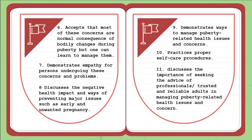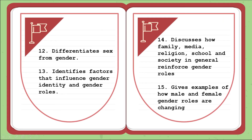Number eleven: discusses the importance of seeking advice from professionals or trusted and reliable adults in managing puberty-related health issues. This is better when the class watches YouTube videos where professionals or trusted adults give advice on how to manage puberty-related health issues. Number twelve: differentiates sex from gender. Sex is categorized as female or male, based on biological and physiological characteristics. Gender refers to the characteristics of women and men constructed socially, such as roles and norms, behavior, and expectations that vary from society to society and can change over time. This must be discussed carefully to avoid misconceptions.